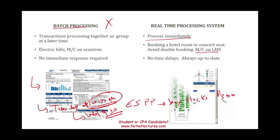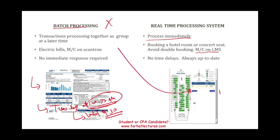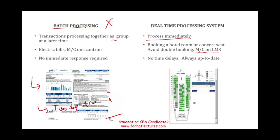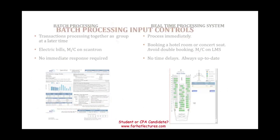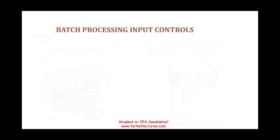Think about reserving a seat on an airline. As soon as you select the seat and pay for it, it's reserved under your name and taken out of availability. We cannot use batch processing in those types of businesses. So most businesses these days use real-time; nevertheless, understanding how batch processing works and its input controls is extremely important.